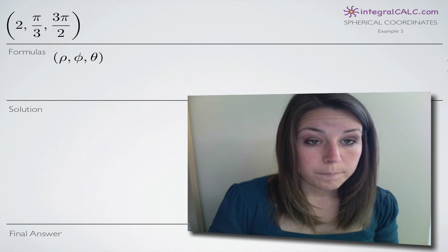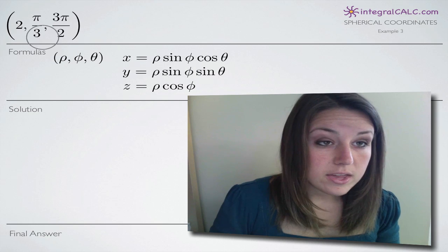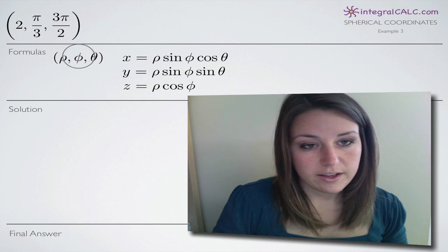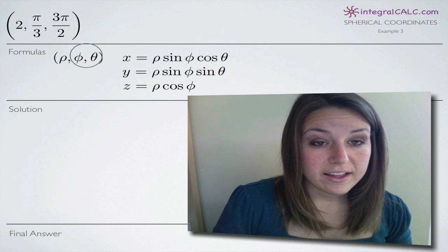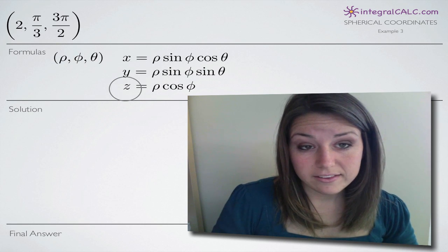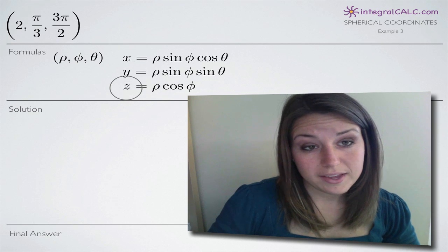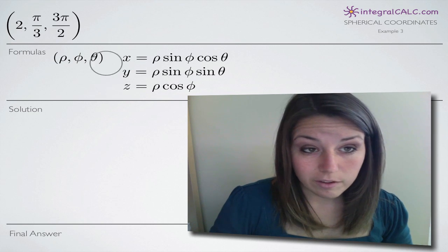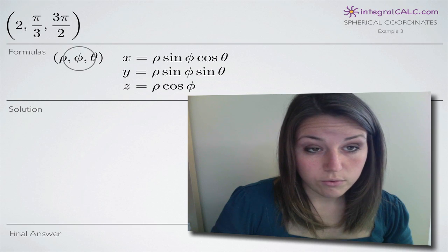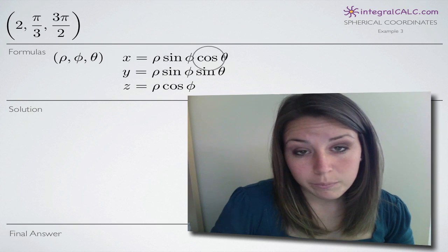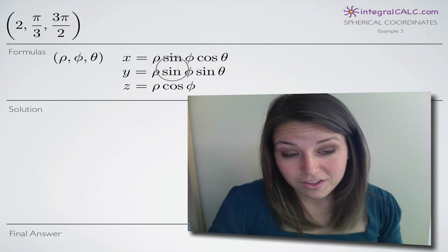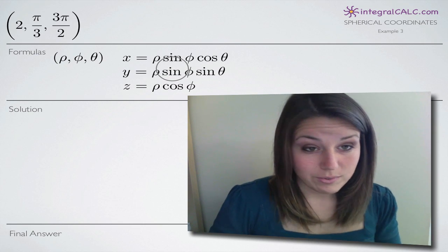A couple of things to remember here. The spherical coordinates come in the form rho, phi, and theta. We're going to be using these three formulas here to find x, y, and z of our Cartesian or rectangular coordinates. As long as we can remember that our spherical coordinates are in this order — rho, phi, and theta — and if we can remember these three formulas and know how to use the unit circle, we should be home free with this kind of problem.